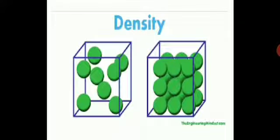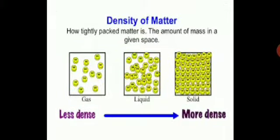This diagram shows how particles are packed in a given substance. Matter can be rigidly packed or loosely packed — this is the density of matter. Solids are very tightly packed and rigid. Liquids are loosely or moderately packed. Gases are very loosely packed — in fact, the particles are free to move. In the diagram, substances are shown from least dense to most dense: gas is the least dense and solid is the most dense among the three states.